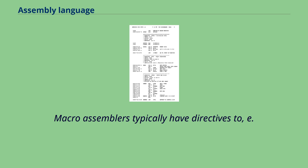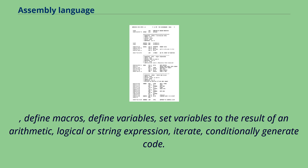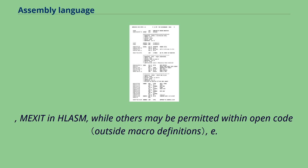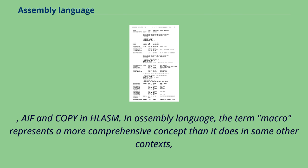Macro assemblers typically have directives to define macros, define variables, set variables to the result of an arithmetic, logical or string expression, iterate, and conditionally generate code. Some of those directives may be restricted to use within a macro definition, such as Mexit in LASM, while others may be permitted within open code.